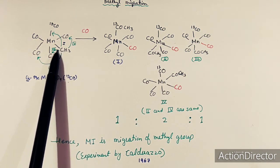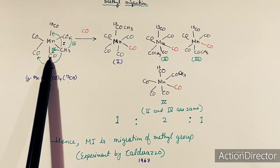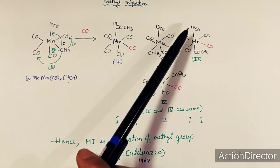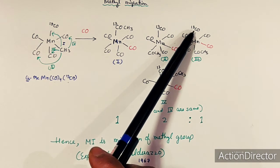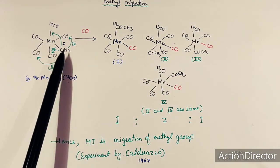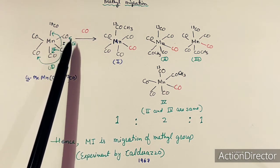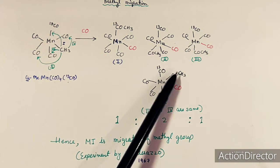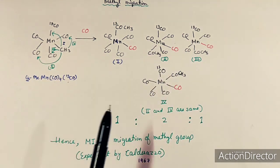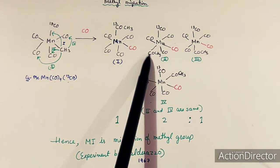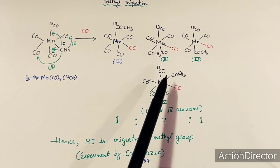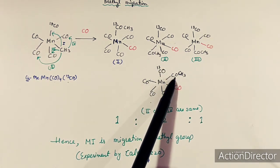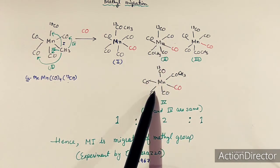For the third product, the methyl migrates to another cis carbonyl, giving a CO-CH₃ group at the trans position to the labeled carbonyl. A fourth migration pathway also exists, but its product turns out to be the same as the third product — in both cases the ¹³CO is in the cis position to the CO-CH₃ group. So products three and four are identical.